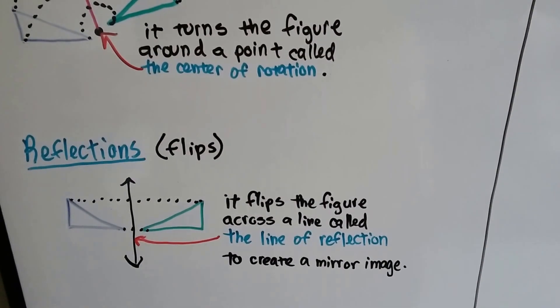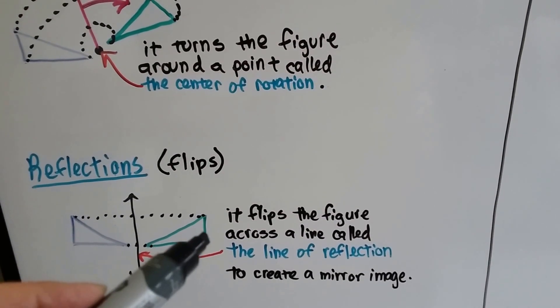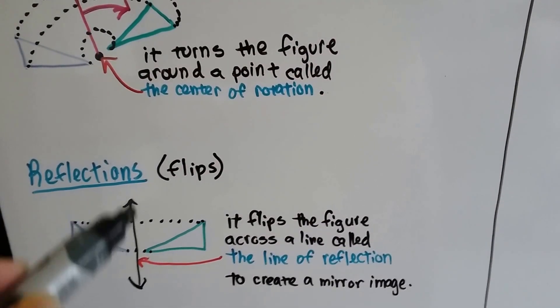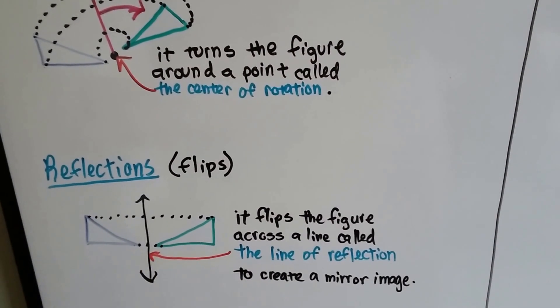A reflection is a flip, and then the figure flips. It's across this line called the line of reflection. It makes a mirror image.